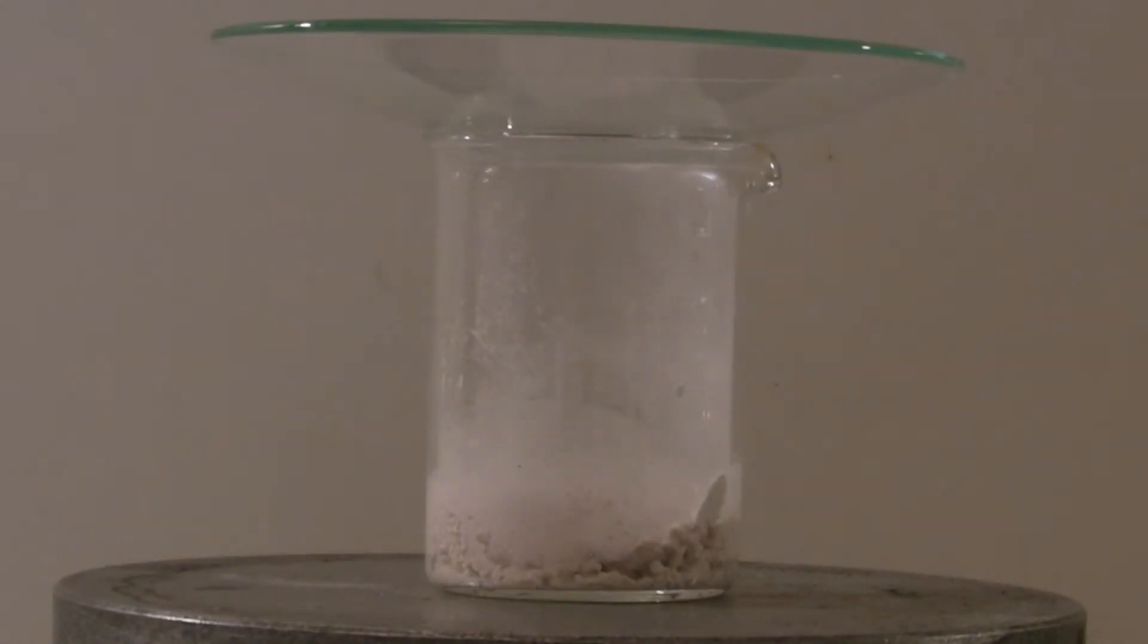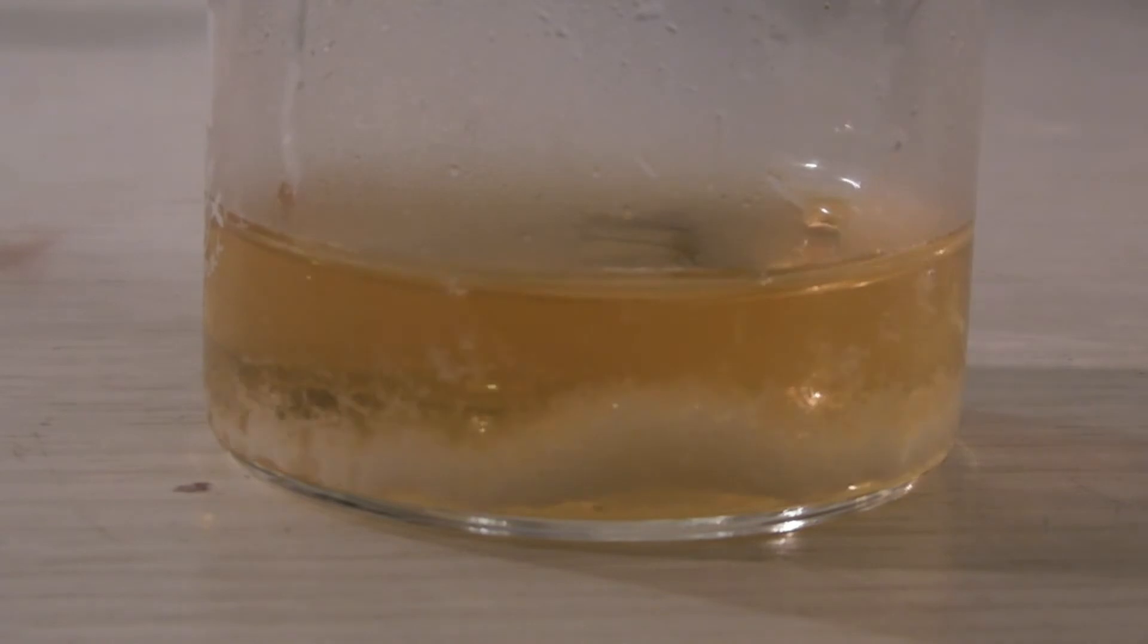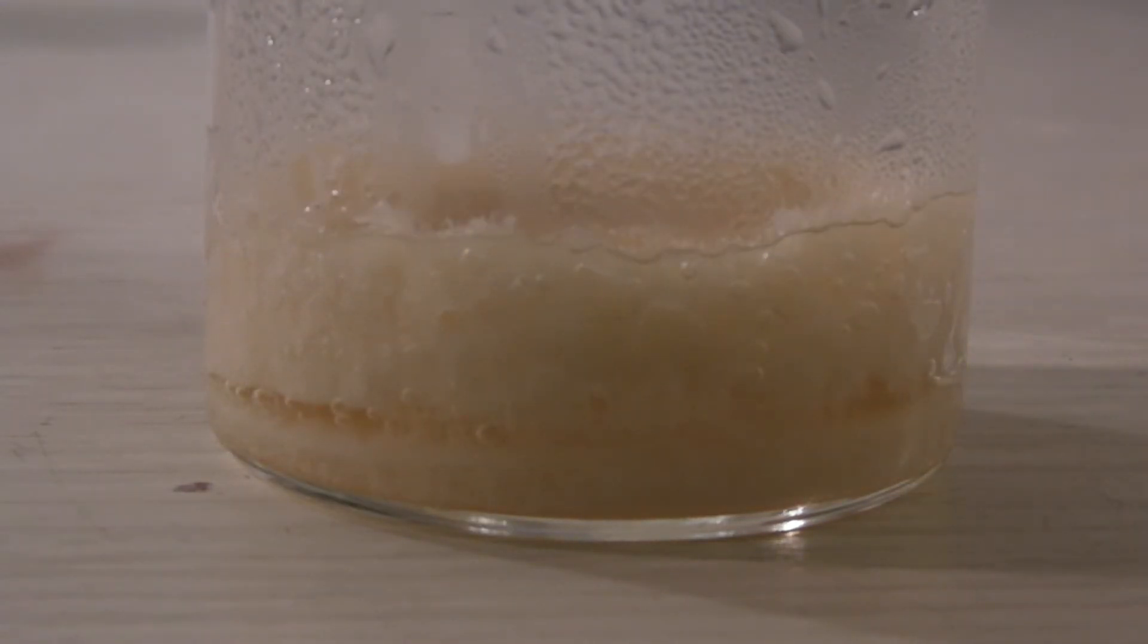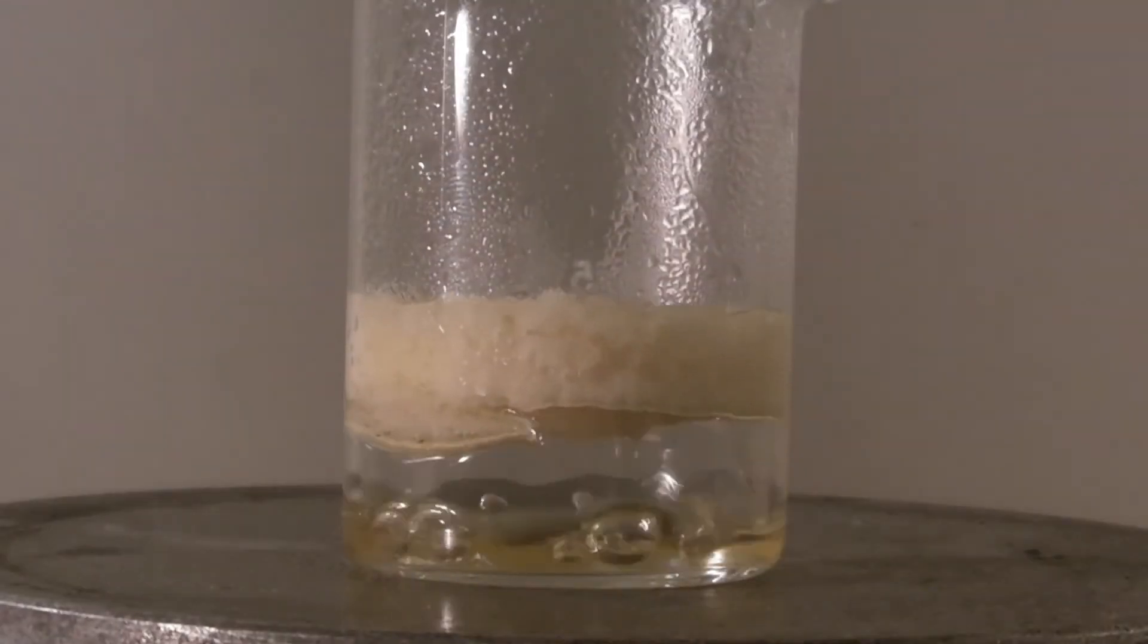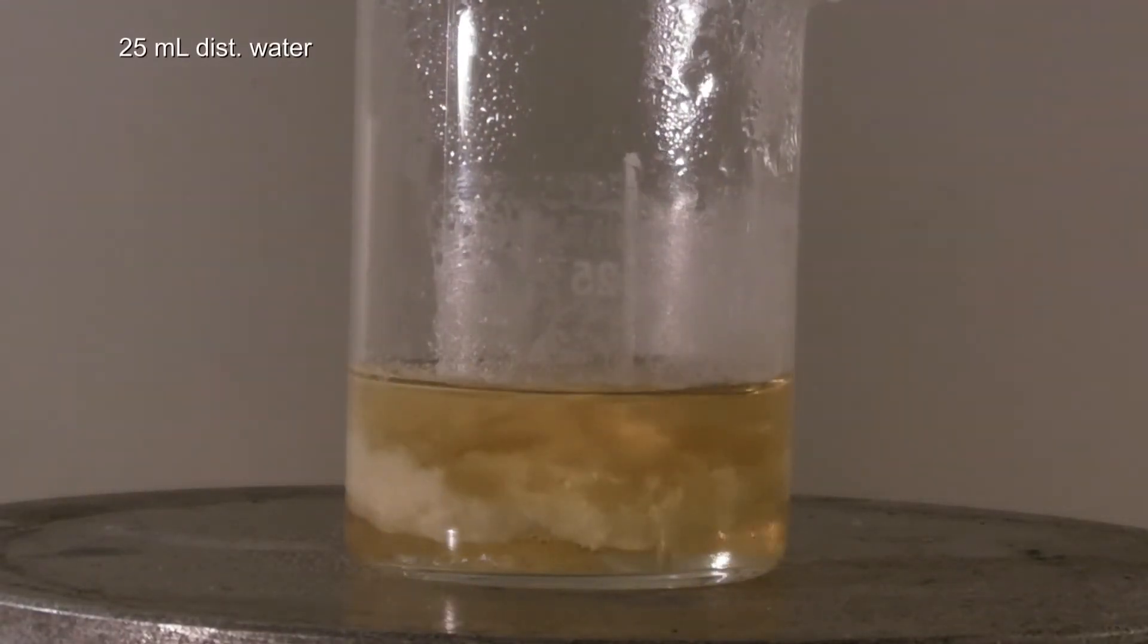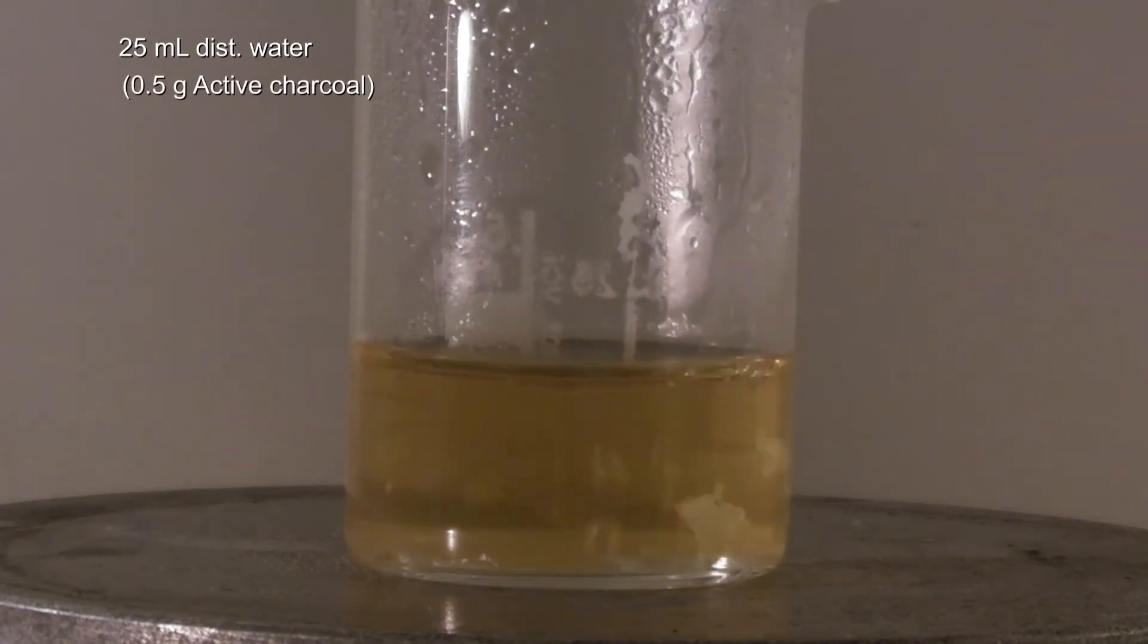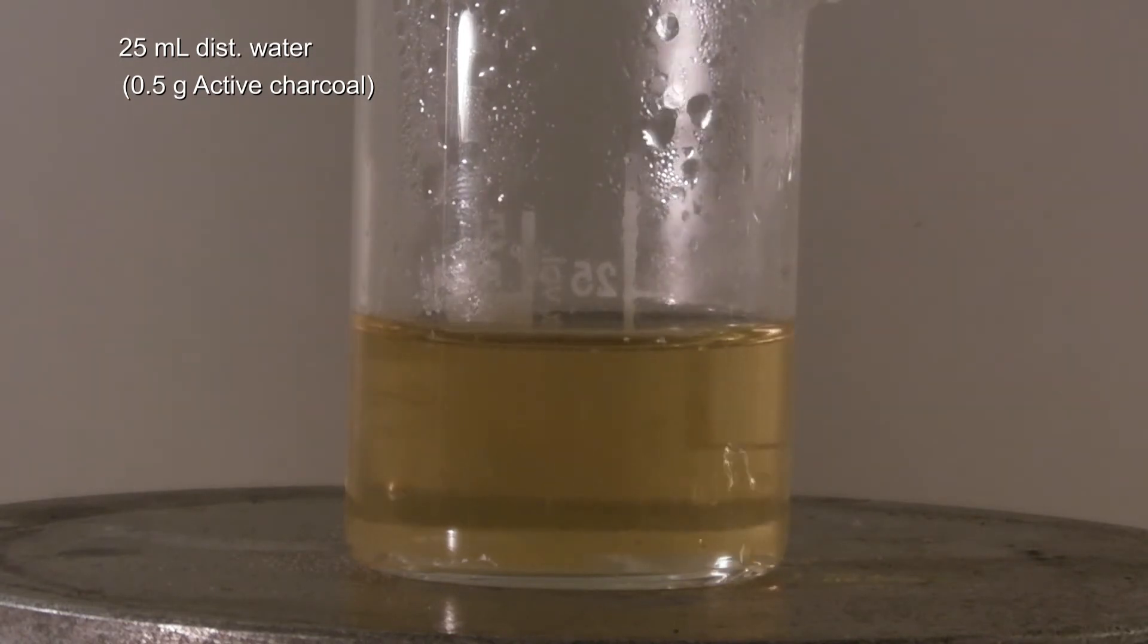At first it was tried to recrystallize from the smallest amount of water as it is common in the lab. But on crystallizing it became obvious that more water should have been added. In the second run, 25 ml of distilled water were added according to the literature. Here 0.5 g of active charcoal could be added and afterwards filtered off from the hot solution to get a cleaner product.